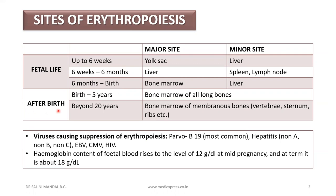After birth, from birth till five years it is the bone marrow of the long bones, and beyond 20 years it is the bone marrow of membranous bones including the vertebra, sternum, ribs and so on. This is a very important topic — it has been asked in many MCQs whether in AIPGT, different state PG exams, as well as a few UPSC papers.